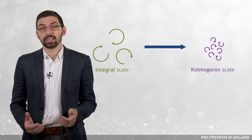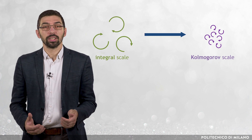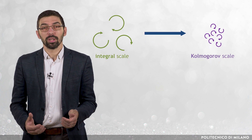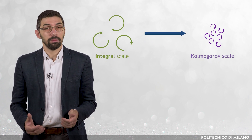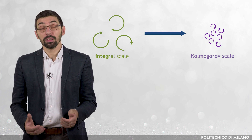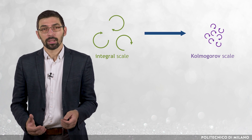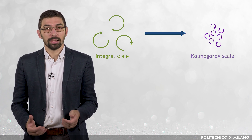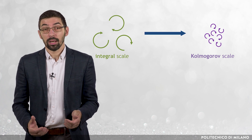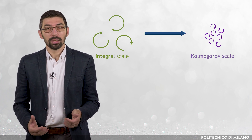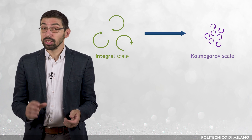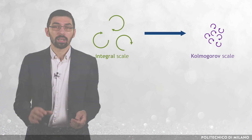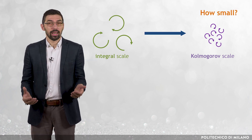Let us now discuss the implications of resolving all the turbulent scales of the fluid flow. To this aim, let us consider a single-phase flow. It is intuitive that turbulence is a chaotic, rapidly varying phenomenon, and therefore the Kolmogorov space and time scales are very small. The question is: how small are they?